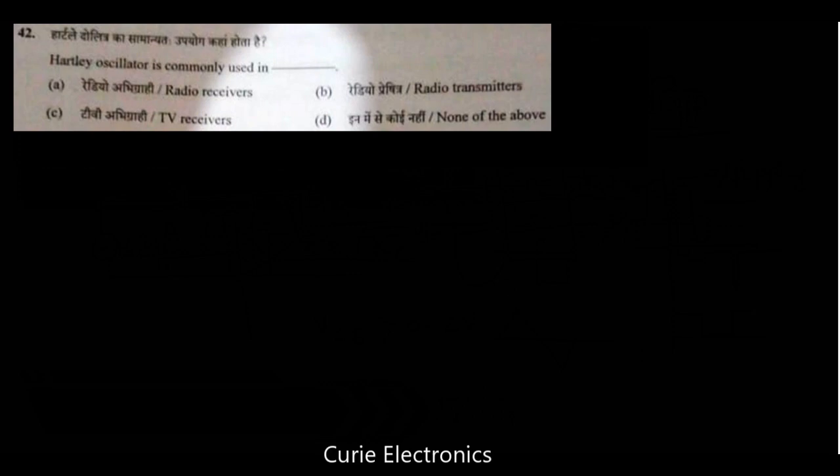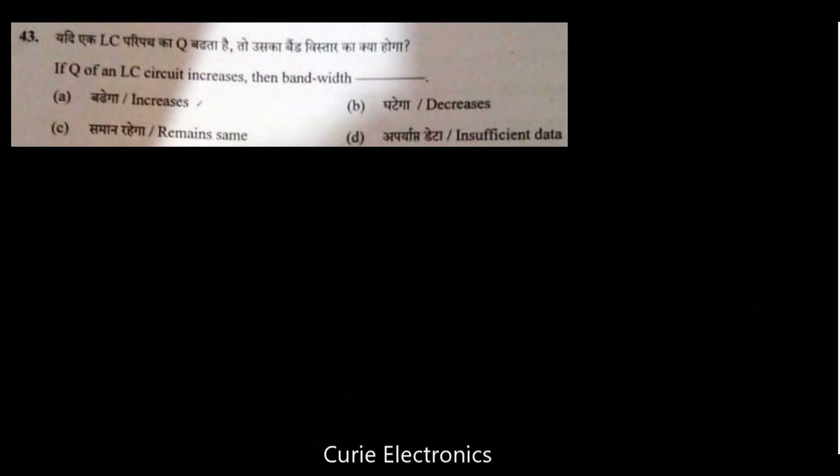Hartley oscillator is commonly used in radio receivers. Answer is option A. If Q of an LC circuit increases then bandwidth decreases. Answer is option B is the answer. What is Q? Q equals XL upon R. XL upon R is the Q. What is Q? Quality factor.